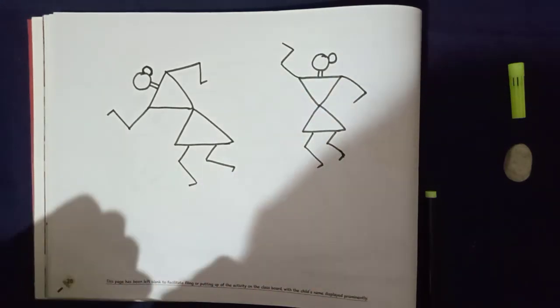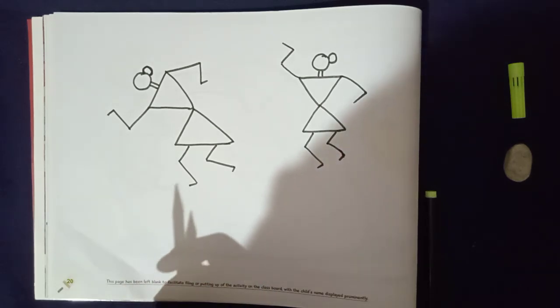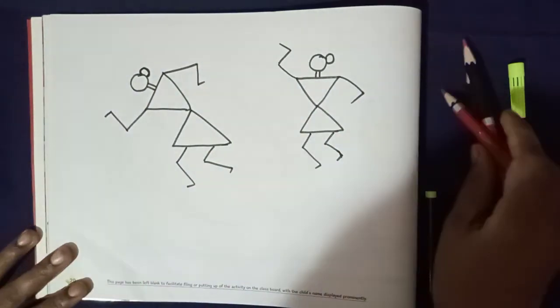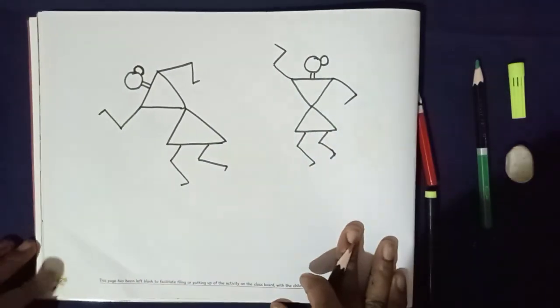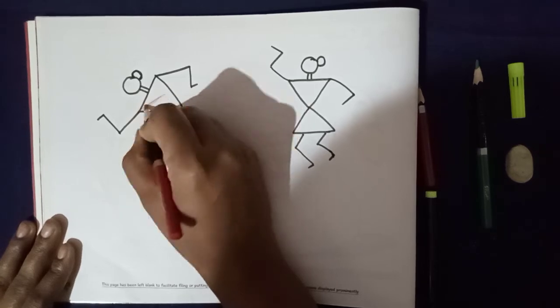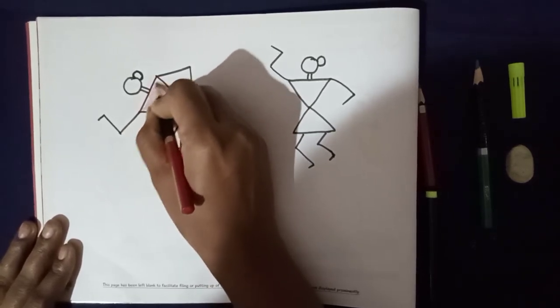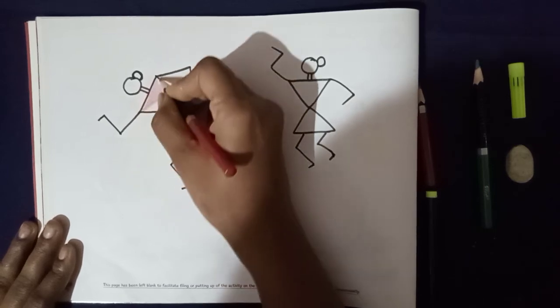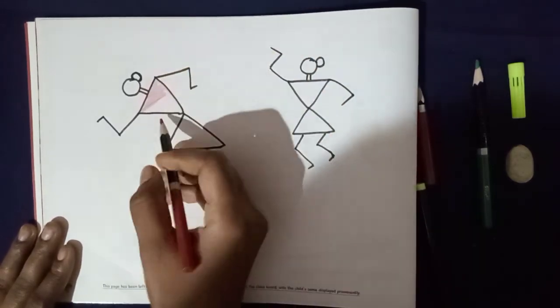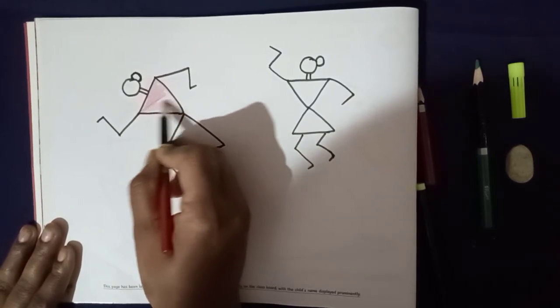Now we will color it. Okay children. Color pencils, crayons, aapke paas jo hai, usse aap acche se coloring karo. Okay bachcho. Like this, children.